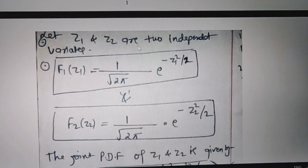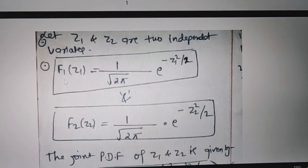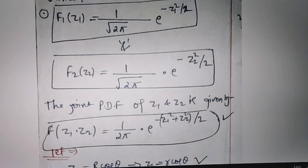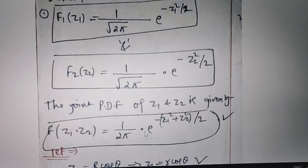I have taken two independent variates z1 and z2, and we can write the probability distribution function for z1 and z2 in this form, where f of z1 is 1 over square root of 2π multiplied with e to the power minus z1 squared divided by 2, and accordingly for z2. So the combined probability distribution function for z1 and z2 is 1 divided by square root of 2π multiplied with e to the power minus of z1 squared plus z2 squared divided by 2.